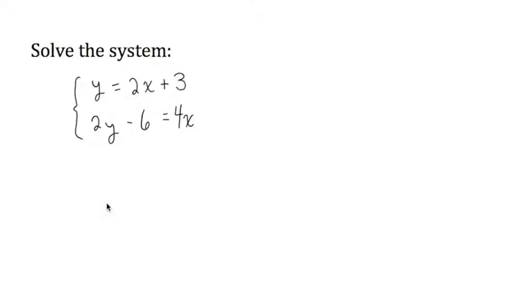Let's solve the system y equals 2x plus 3 and 2y minus 6 equals 4x. We can solve this in one of two ways. We can solve it by substituting, or we can solve by graphing.